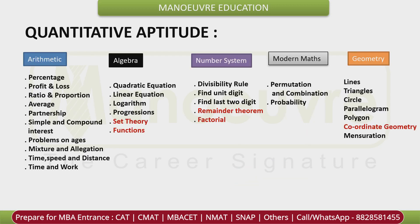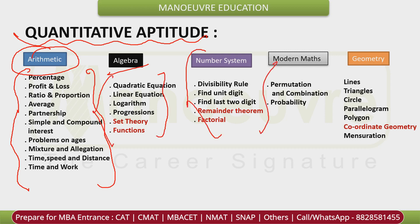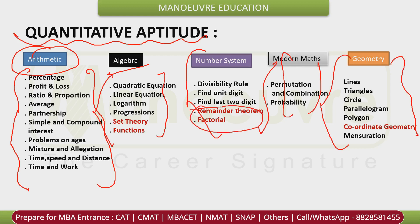In the Quant section the dominating area is Arithmetic followed by Algebra. Topics include Number System, Modern Maths, Geometry, and Mensuration. Some of these are a little advanced level or tricky type topics, so mark them accordingly for your preparation.